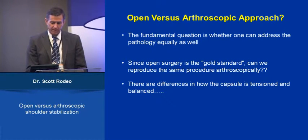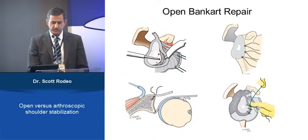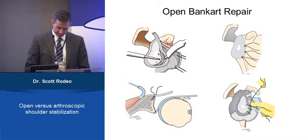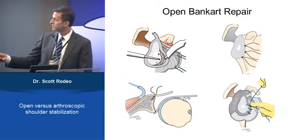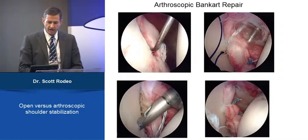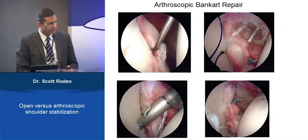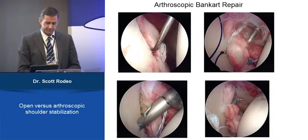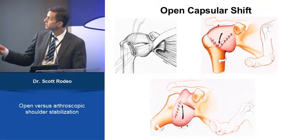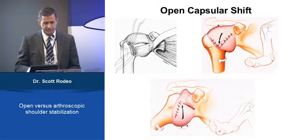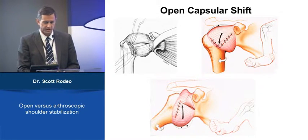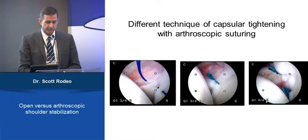There are clearly differences in how the capsule is tensioned and balanced between the two approaches. With your open Bankart repair, you're putting the suture anchors in and then repairing the capsule. That's going to be very different than our arthroscopic approaches, where we're working inside the joint, typically with capsular plication sutures passed arthroscopically. With an open capsular shift, we have the ability to overlap the capsule — not only tension it appropriately but overlap the tissue — which is harder to do arthroscopically.